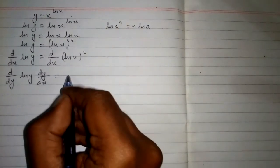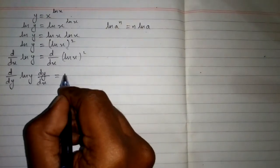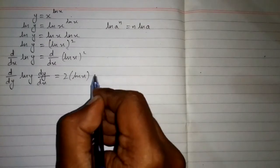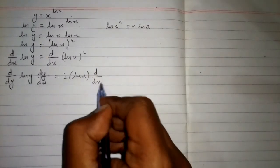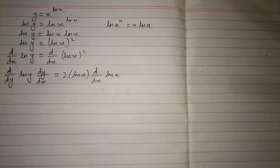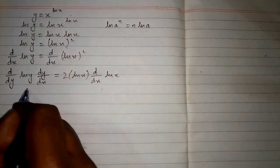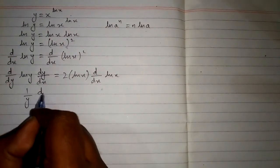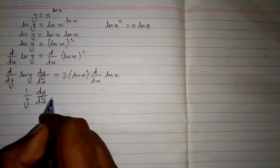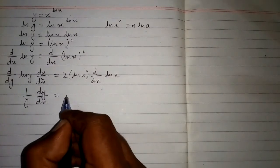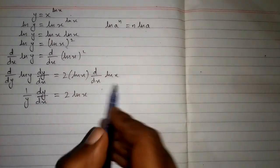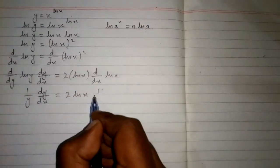Here we will apply the power rule of differentiation, giving us 2 times ln x multiplied by the derivative of ln x. The derivative of ln y is 1 upon y, so we have 1 upon y times dy by dx is equal to 2 times ln x. And the derivative of ln x is 1 upon x.